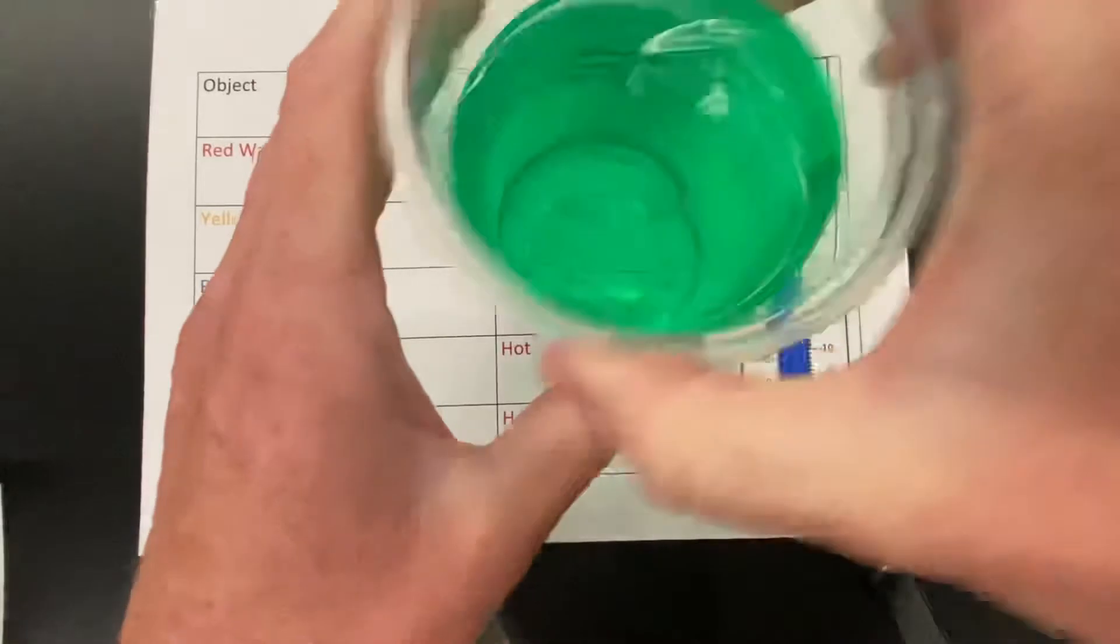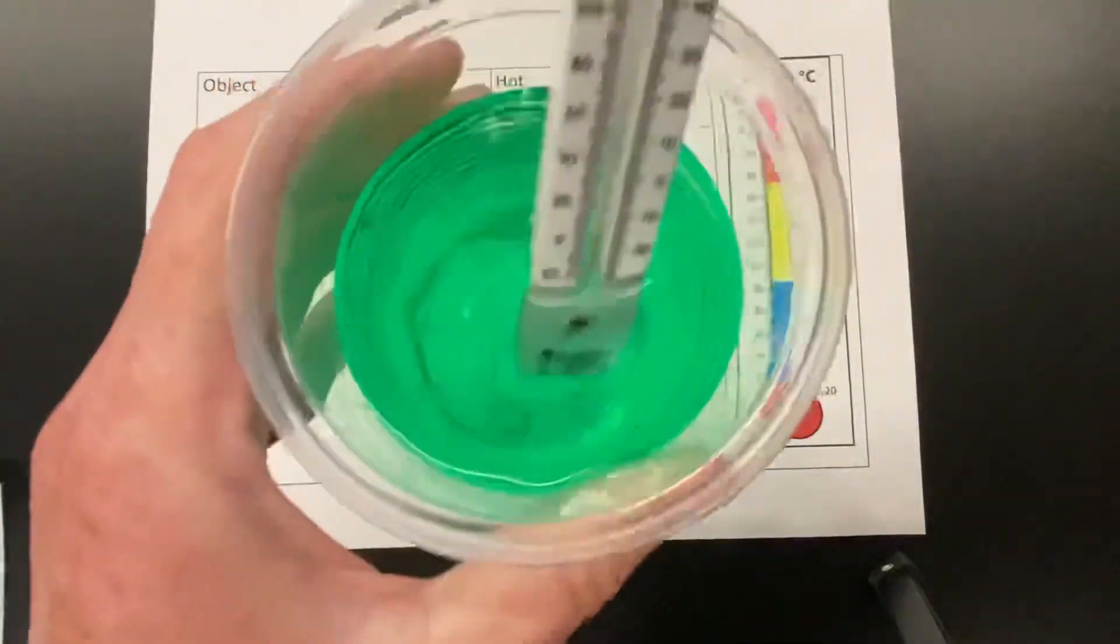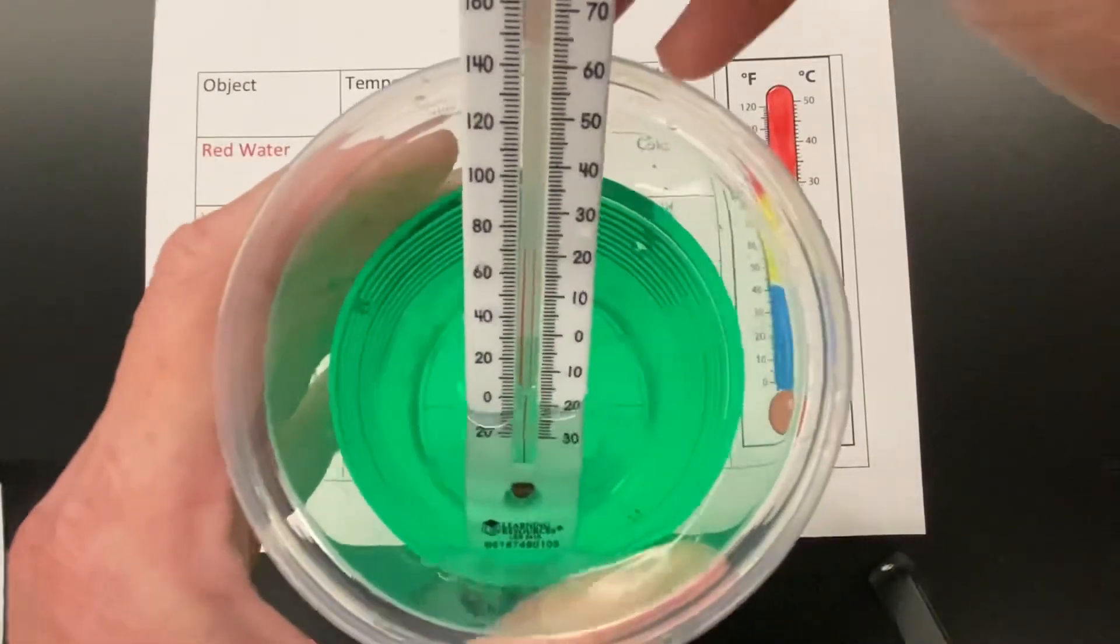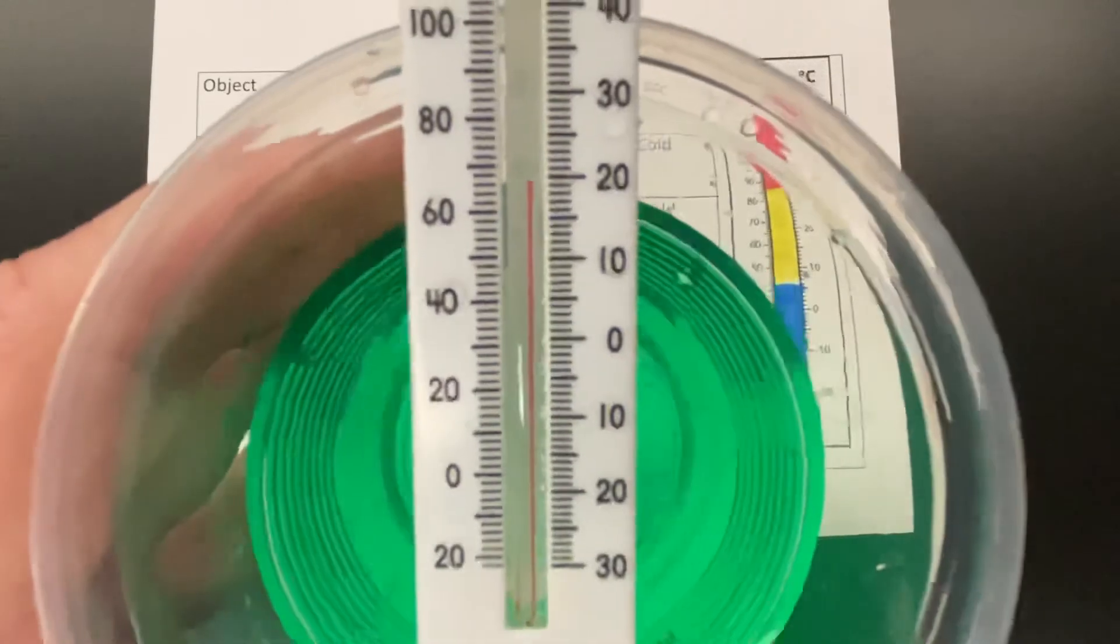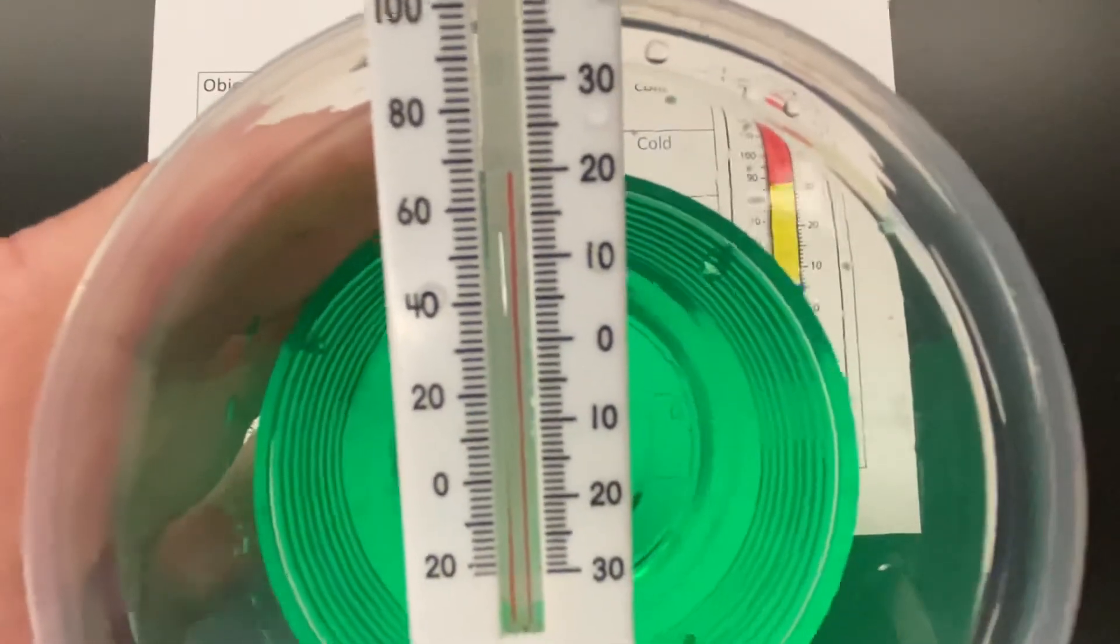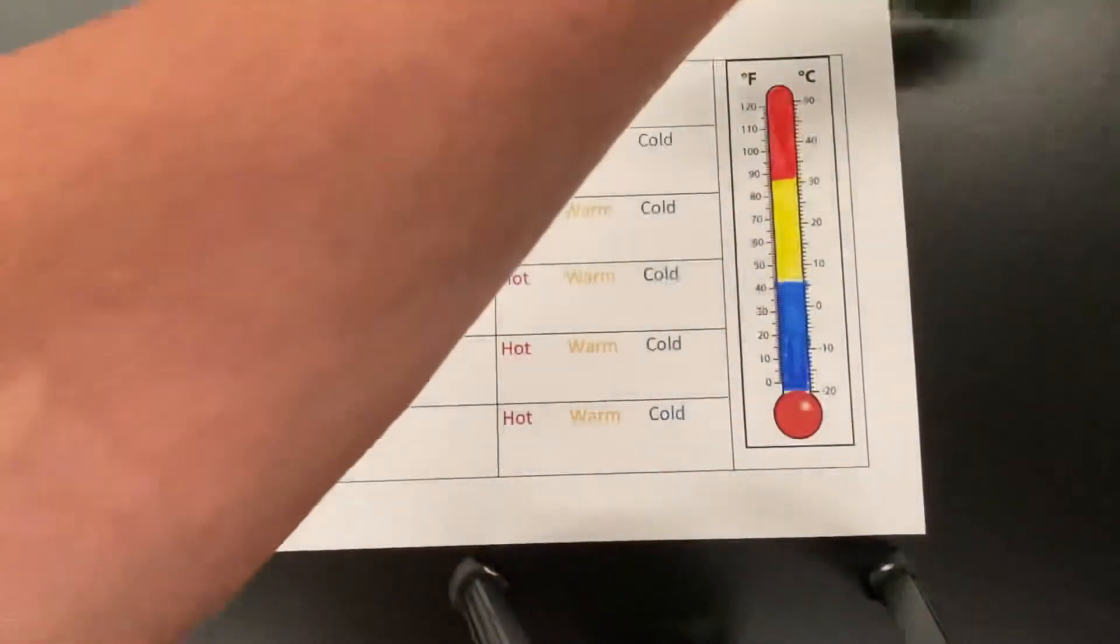Remember our green water from a minute ago. So I'm going to take the temperature of the green water. One, two, three, four, five. I'm going to read the temperature, which you can see. The line goes up to twenty degrees on the Celsius side, so I record twenty degrees.